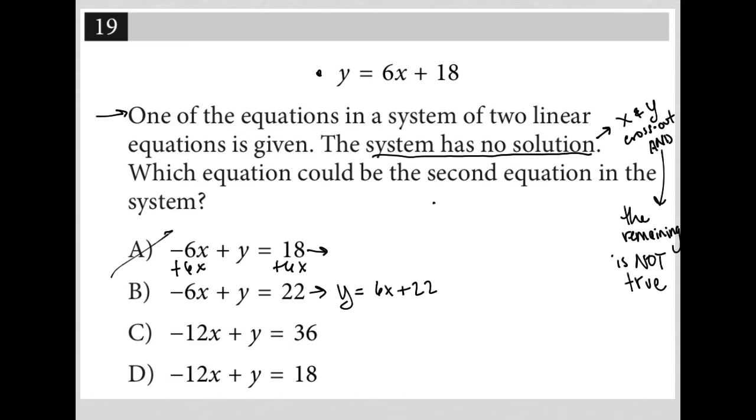So if I have my original y equals 6x plus 18, and choice B's possibility, which is y equals 6x plus 22, now when I subtract the bottom equation from the top, I get a cross out in y, I get a cross out in x, but what I'm left with here is 0 equals negative 4, and that is not true. Therefore, choice B has to be the right answer.